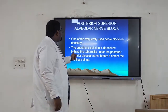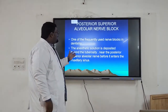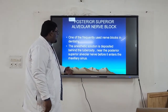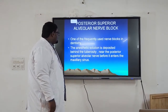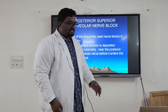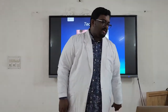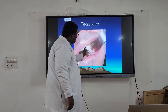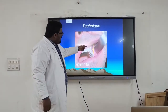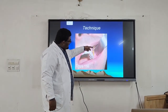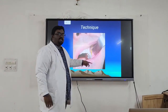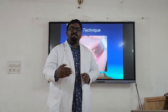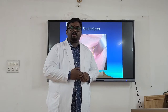The posterior superior alveolar block is one of the frequently administered nerve blocks. The anesthetic solution is deposited behind the tuberosity near the posterior superior alveolar nerve before it enters the maxillary sinus. Looking at the photo, the posterior superior alveolar block is given at the position above the bucco-alveolar fold of the second molar — that is the place where we access and anesthetize the posterior superior alveolar nerve.